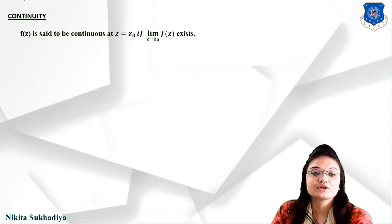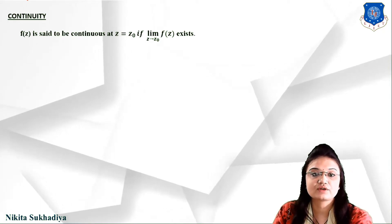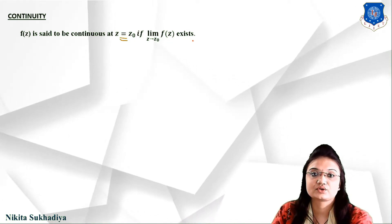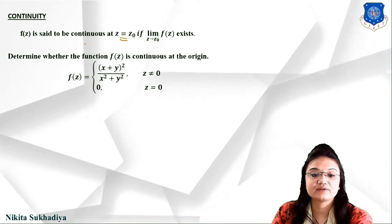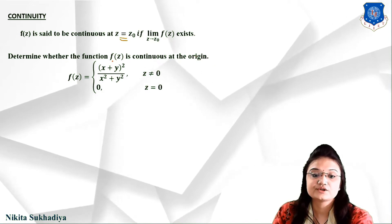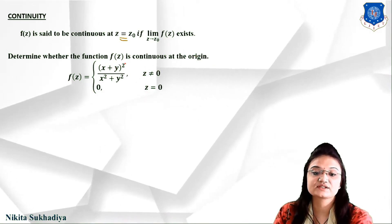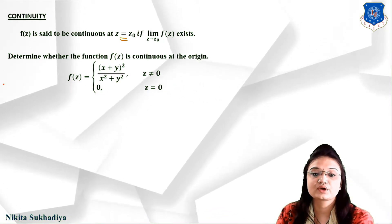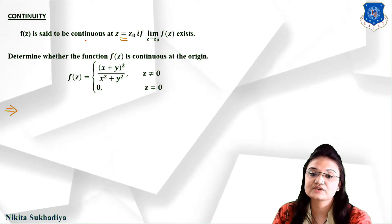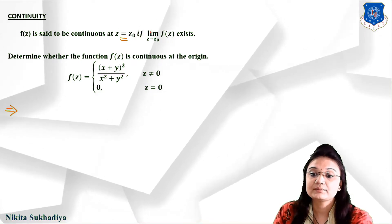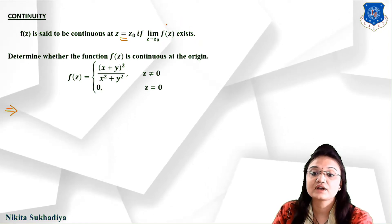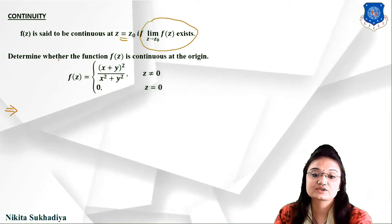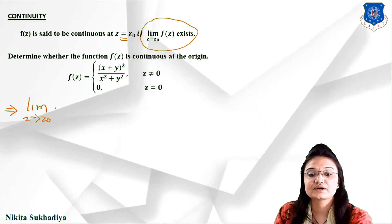Let us start with continuity. A function f(z) is said to be continuous at z = z₀ if the limit as z tends to z₀ of f(z) exists. Let's take one example: determine whether the function f(z) is continuous at the origin or not. We have f(z) = (x+y)² / (x²+y²) where z ≠ 0, and f(z) = 0 when z = 0. We have already studied when this limit exists in our previous lecture.